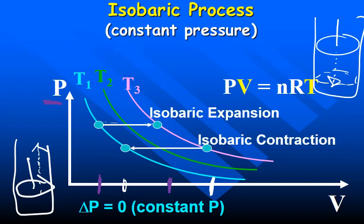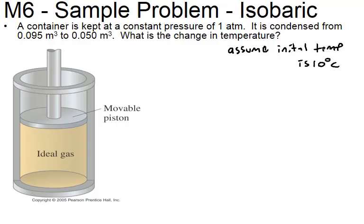This is called isobaric expansion or isobaric contraction. In problem M6, a container is kept at a constant pressure of one atmosphere and condensed from 0.095 m³ to 0.050 m³. The initial temperature is 10 degrees, and we want to find the change in temperature.